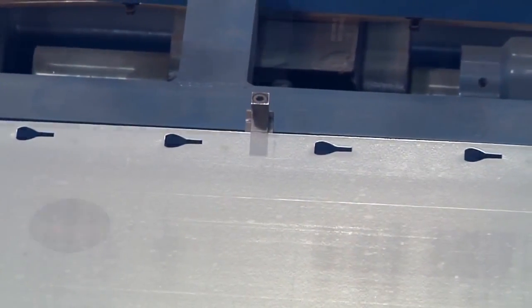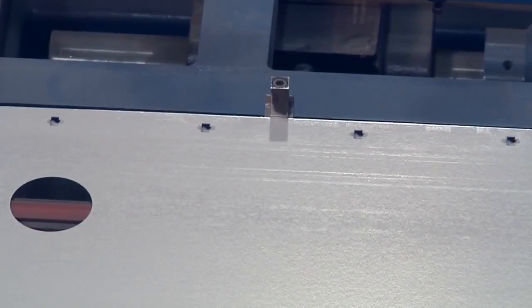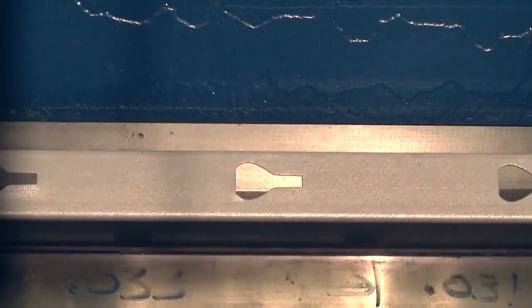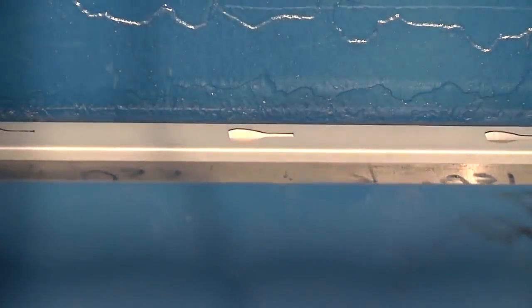We punch a series of slots in the top panel and an equal number of tabs in the bottom panel, and machines create a perfect 90 degree edge.